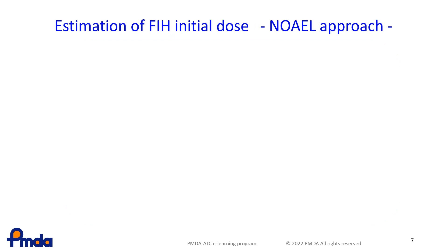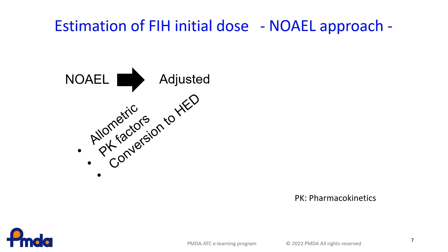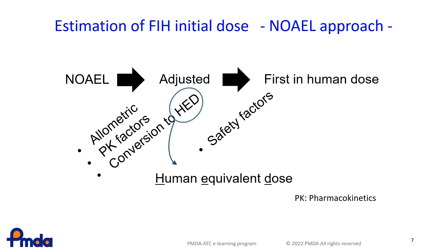This shows a method for determination of first-in-human doses based on the NOAEL. If you determine a safe human dose based on the NOAEL obtained by a toxicity study in animals, the NOAEL must be adjusted for the human level. Allometric scaling, PK factors taking the difference in blood concentrations or protein binding into account, conversion to human-equivalent dose (HED), and safety factors are used for this adjustment.